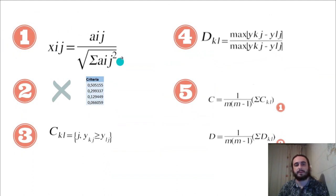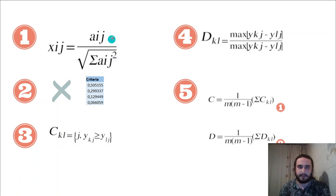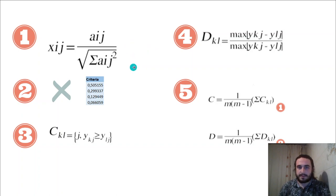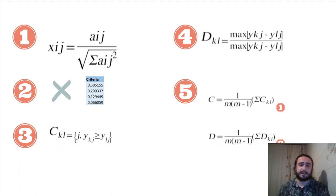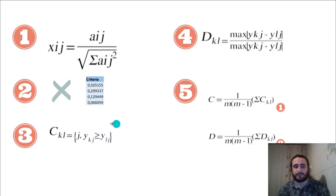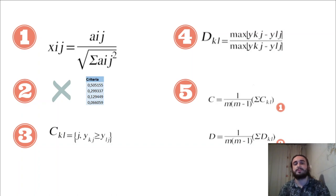This normalization is similar to TOPSIS — don't worry, we will do it in Excel. After normalizing, we multiply by our criteria weights as always. Then for each pair of alternatives, if one alternative is better than another in terms of a criterion, we assign that criterion's weight to the concordance matrix. If alternative A has an advantage over B, we use A's criteria rates.